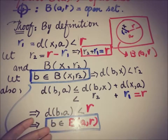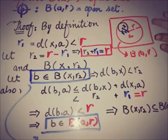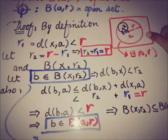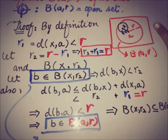Initially b was taken from B(x, r2), and now b is shown to be a member of B(a, r). This implies B(x, r2) ⊆ B(a, r). Since x was an arbitrary point of B(a, r), this is true for every point, satisfying the definition of an open set. Therefore every open ball is an open set, and this completes the proof.